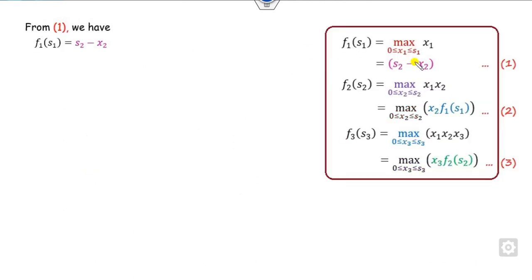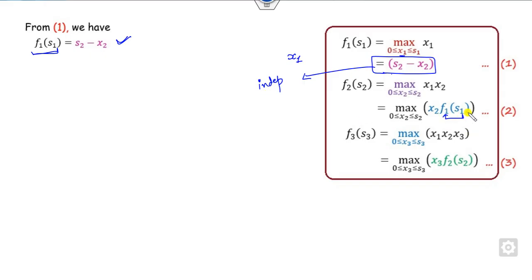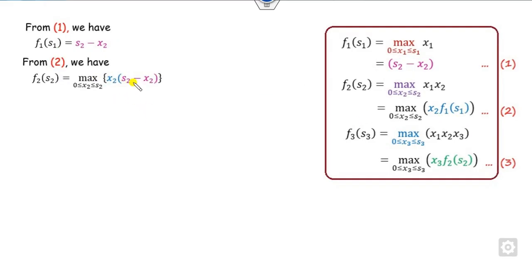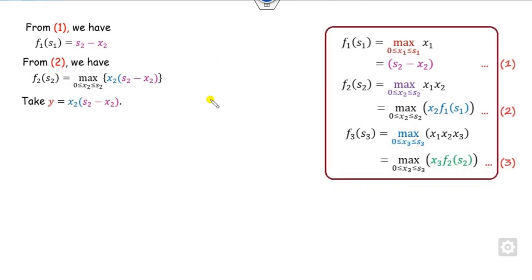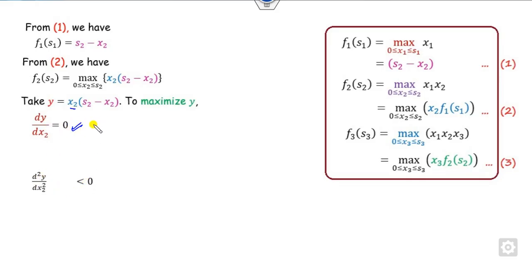From equation one, we can see that part of the expression is independent of x1, so that becomes the optimal solution and we substitute f1(s1) accordingly. Now the target is to maximize. Whenever there is maximization, we take the first derivative equal to zero and verify the second derivative is less than zero. We consider this as y and find these derivatives with respect to x2.